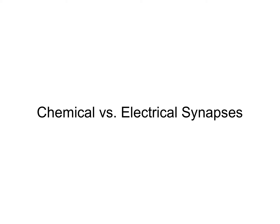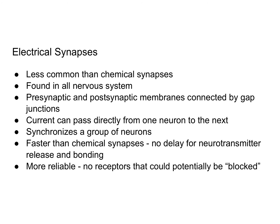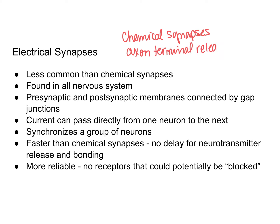Now we're going to talk about the difference between chemical and electrical synapses. In a previous video, we talked about chemical synapses. With chemical synapses, you have an axon terminal that releases a neurotransmitter that crosses the synaptic cleft and binds to a receptor in the dendrite of the postsynaptic neuron.